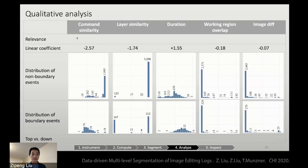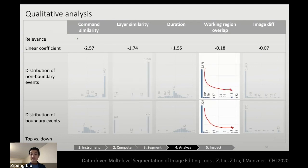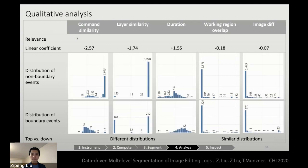And then we also plot the distribution of each feature separated by the non-boundary and boundary. So we want to compare the distribution between the top distribution and bottom distribution. Let's look at this layer similarity example. On the top distribution, you have huge difference between the two extreme values, but on the bottom, they are quite balanced. In an earlier example, in this working region overlap feature, the two distributions are quite similar despite the different numbers.